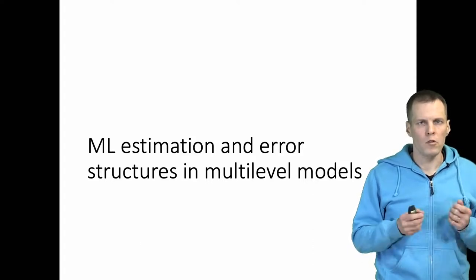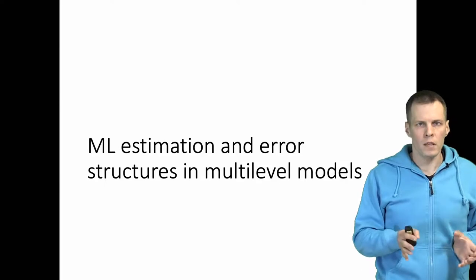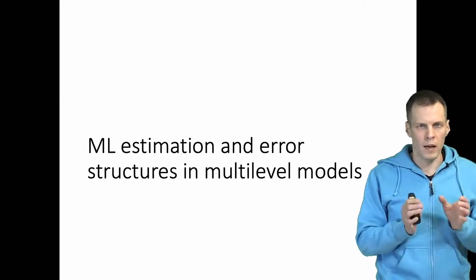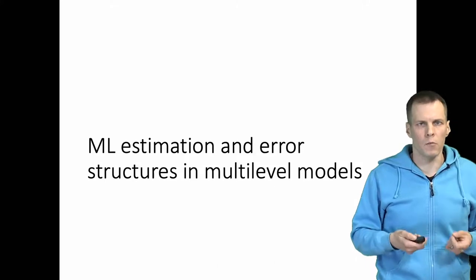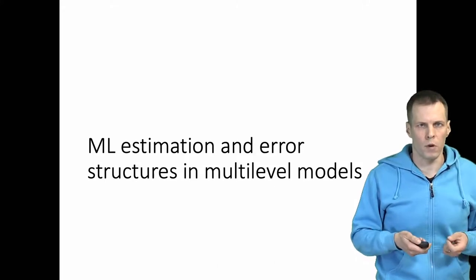To understand what error covariance structure means and what impact it has on the analysis, we need to first understand the maximum likelihood estimation of a normal regression model.